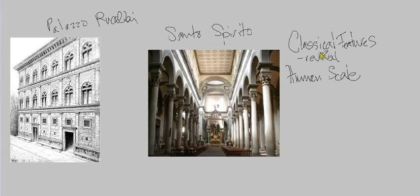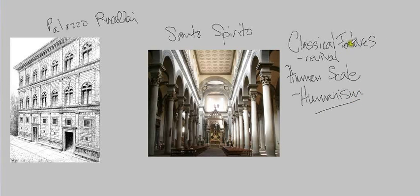This revival of classical antiquity involved not only borrowing classical art and architecture, but also the ideas and ideals of antiquity — and that is where humanism comes in. Humanism was the emphasis on learning, civic engagement, and interest in the individual, which is where this interest in a more human-scale building comes into play.